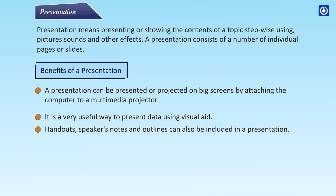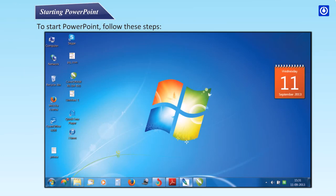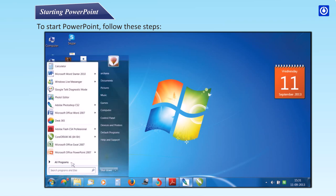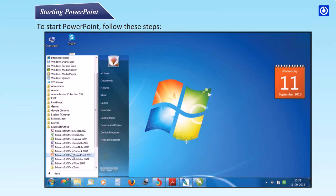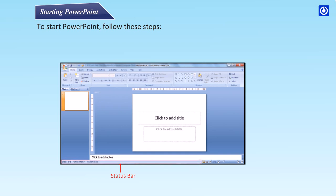Handouts, speakers, notes, and outlines can also be included in a presentation. To start PowerPoint, follow these steps: Start button > All Programs > Microsoft Office > Microsoft Office PowerPoint 2007. The PowerPoint window is displayed, showing the Office button, Quick Access Toolbar, Title bar, Status bar, Slide View buttons, and Zoom slide bar.